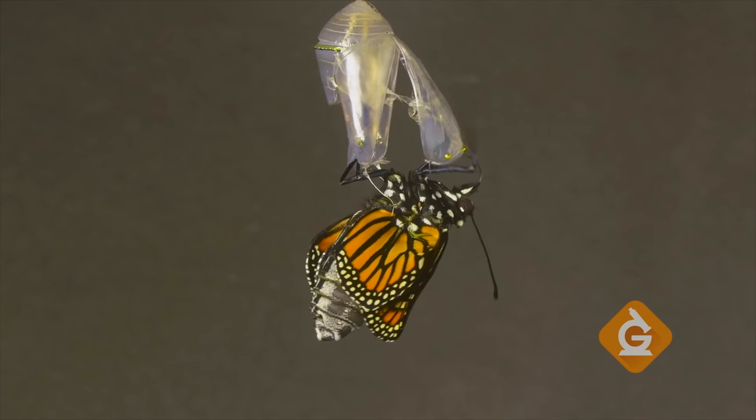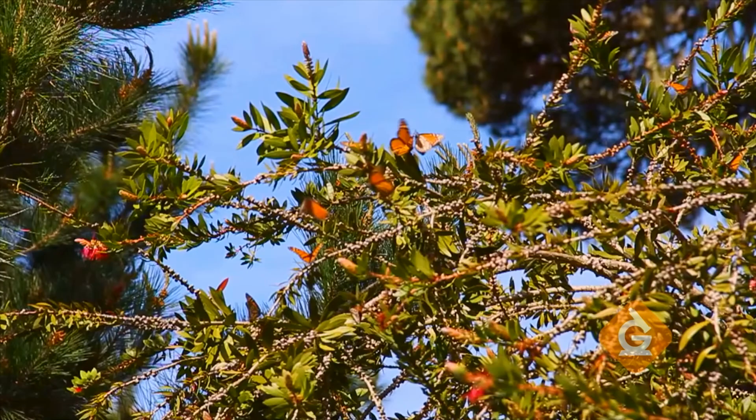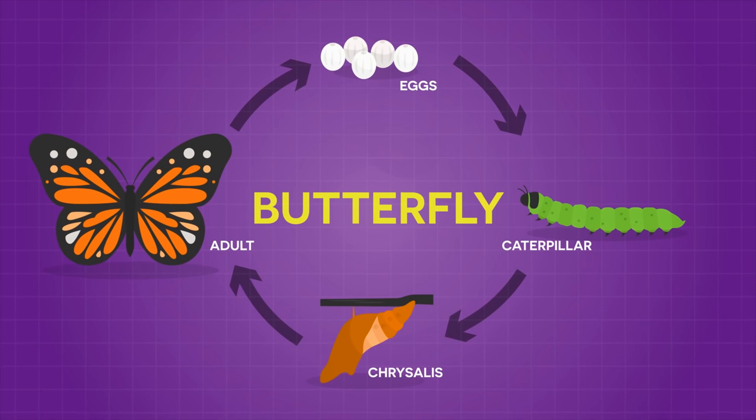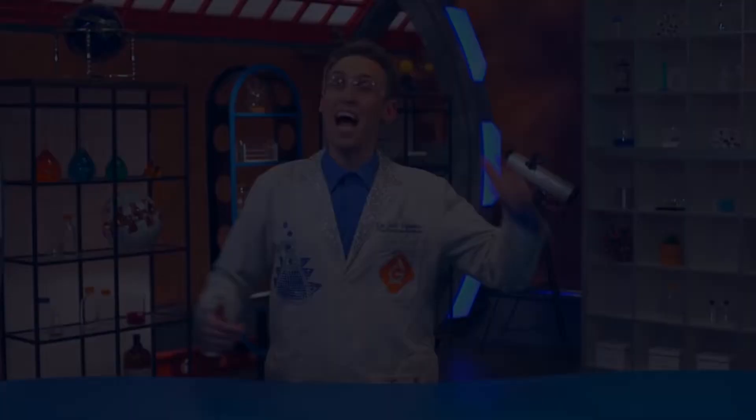Once it masters how to fly, the butterfly will look for a mate. And when a female lays its eggs, the life cycle will start all over again. We can represent all those stages in a diagram like this. It shows each stage in order, and it's in the shape of a circle because a life cycle repeats again and again. As an adult butterfly dies, new ones are born and the cycle continues.